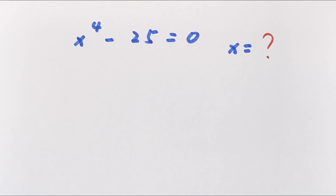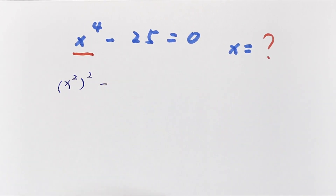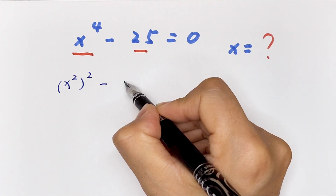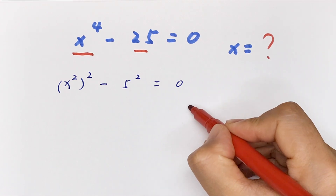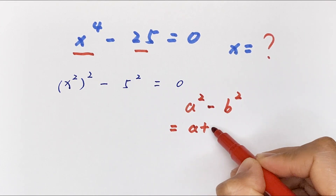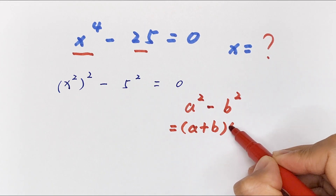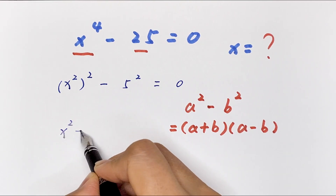Hello everyone. Find all the four roots of x to the power 4 minus 25 is equal to 0. First, x to the power 4 is x squared, bracket squared, minus 25, which is 5 squared, is equal to 0. This equation is in the perfect square form, so we'll apply the rule a squared minus b squared is equal to a plus b times a minus b.